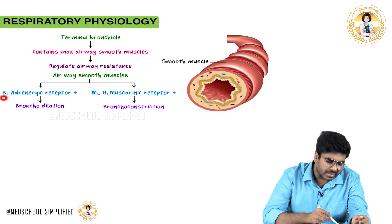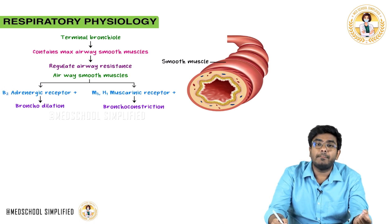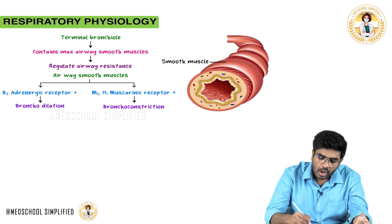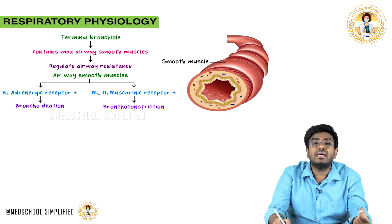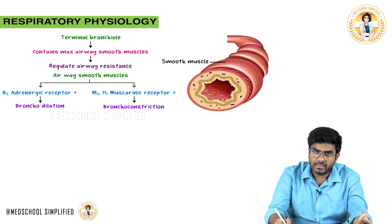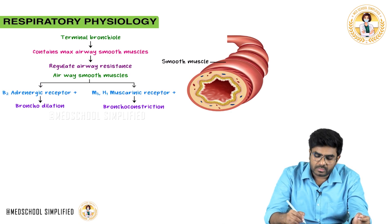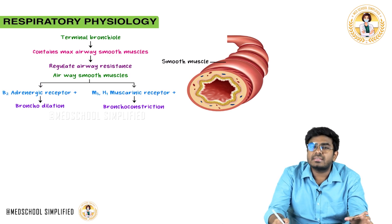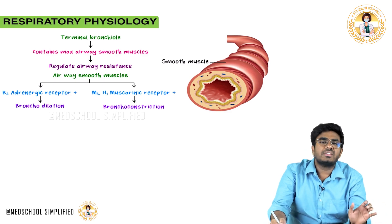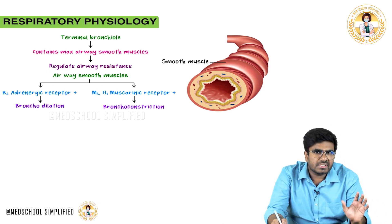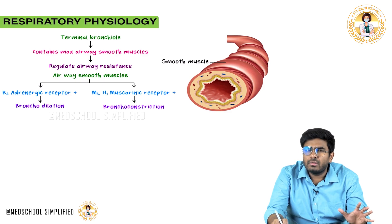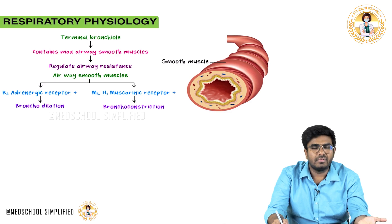The sympathetic receptor present on airway smooth muscles is the beta-2 adrenergic receptor. Whenever you stimulate this beta-2 adrenergic receptor, the smooth muscles relax, causing bronchodilation. Whenever the sympathetic nervous system is activated, you need more oxygen.